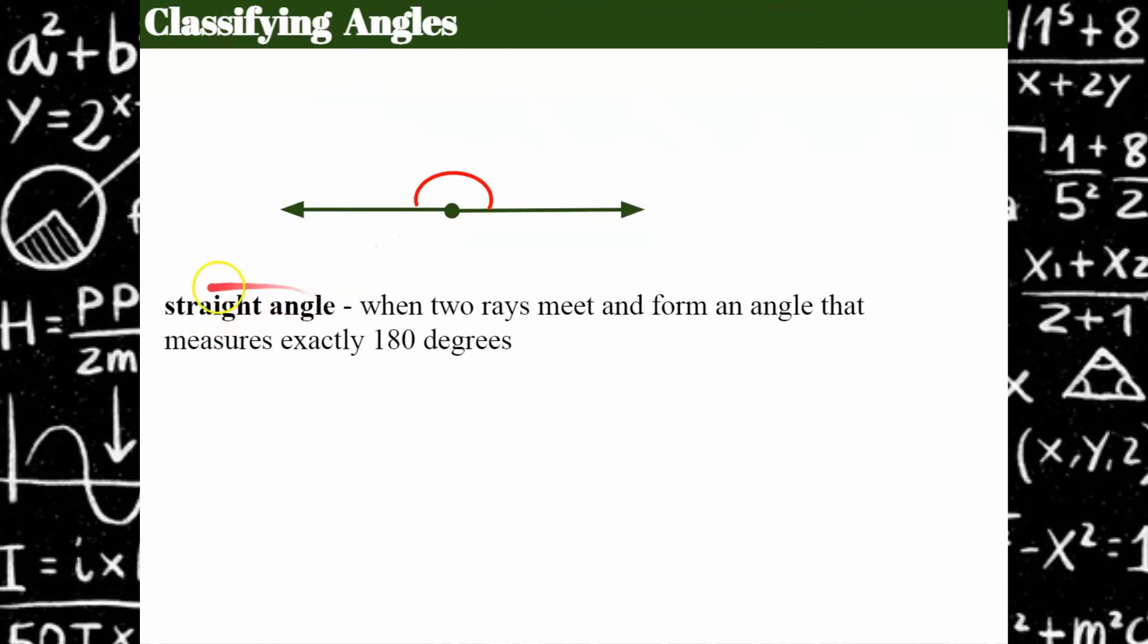Then we have what we call a straight angle, and straight, like straight line, which I always think is redundant, right? All lines are straight. When two rays meet, and there's a vertex here, to form an angle that is exactly 180 degrees, we can call that a straight angle. So remembering that even though this is a line, you can also name this angle right here, and it's a straight angle with a measure of 180 degrees.